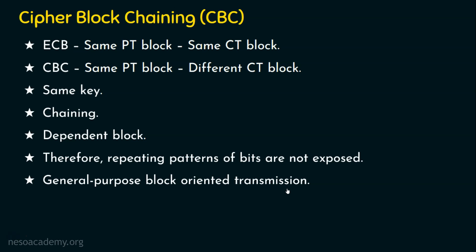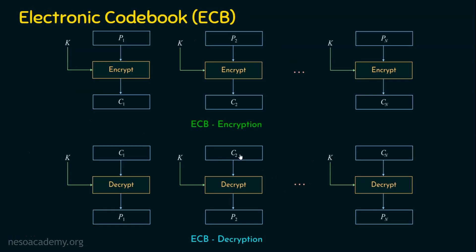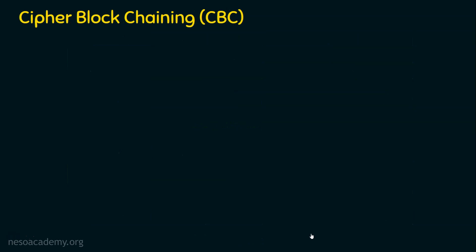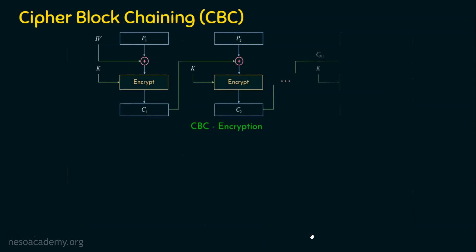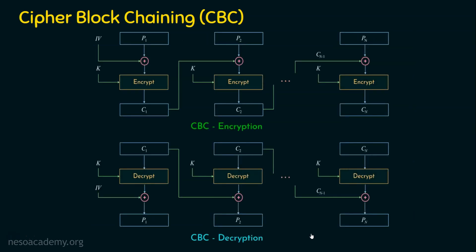Before seeing the operation of CBC, let's quickly see the operation of ECB. In ECB, all the blocks are independent — there is no relationship between any block. Whereas in CBC, we are going to have dependent blocks, and we are bringing in the concept of chaining, where you can see that the blocks are chained.